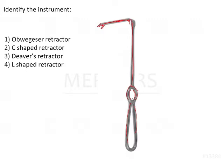The only two options that we could probably look at would be either an Obwegeser retractor or an L-shaped retractor. The answer for this question would be the Obwegeser retractor. All of the instruments — the C-shaped retractor, the D-verse retractor, Obwegeser, as well as L-shaped — all four of them are used to retract the soft tissues away from the mandible.